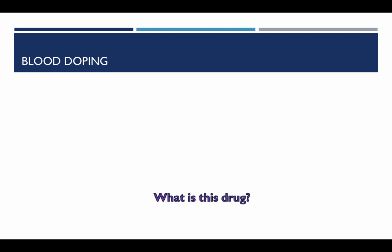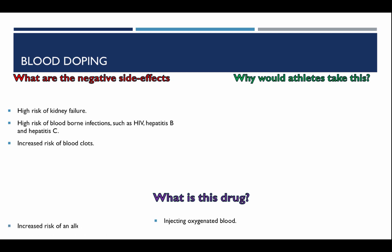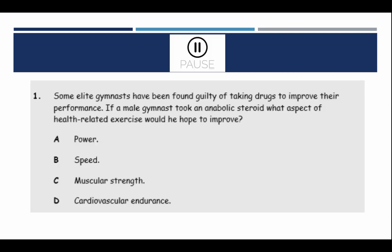Blood doping. What is blood doping? This is injecting oxygenated blood into the system. What are the negative side effects? There's a higher risk of kidney failure, a higher risk of blood-borne infections such as HIV, hepatitis B, and hepatitis C, an increased risk of blood clots, and an increased risk of an allergic reaction. Athletes would take this because more oxygen is transported to the working muscles, increasing endurance and allowing the performer to train for longer.